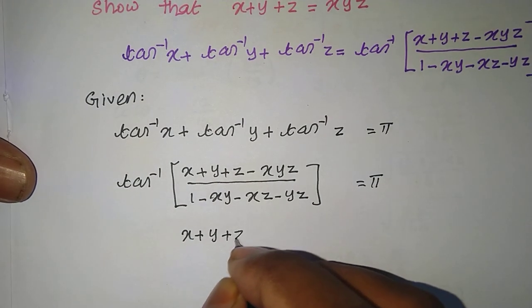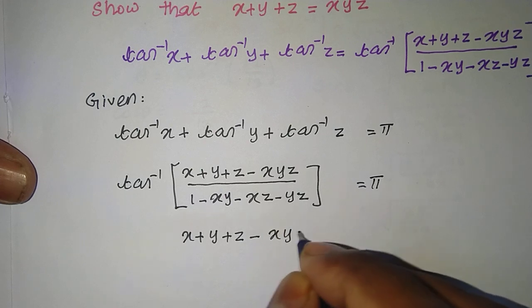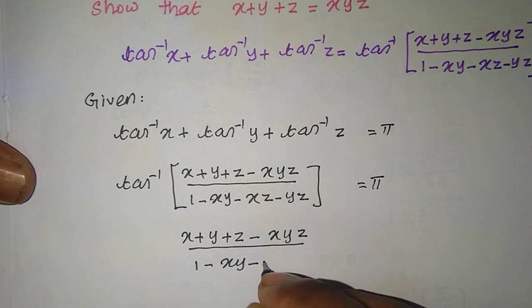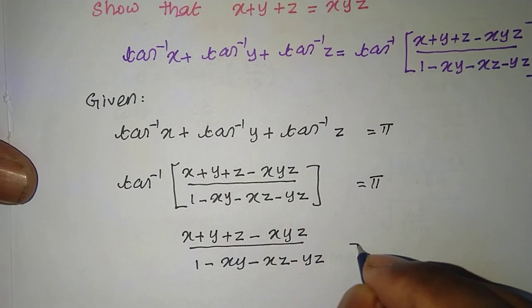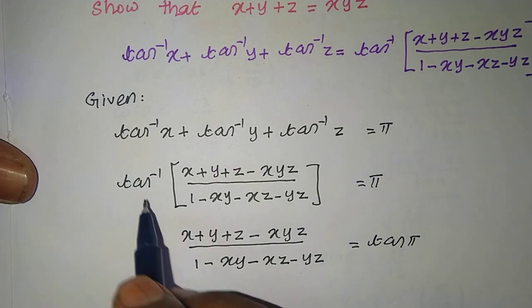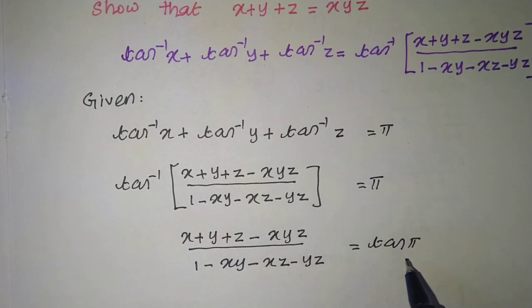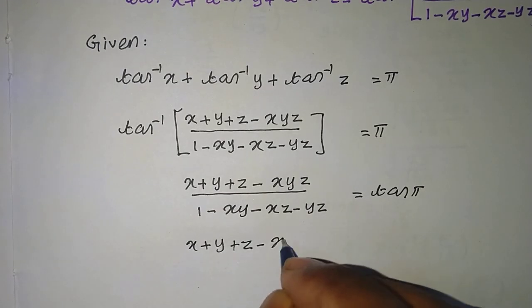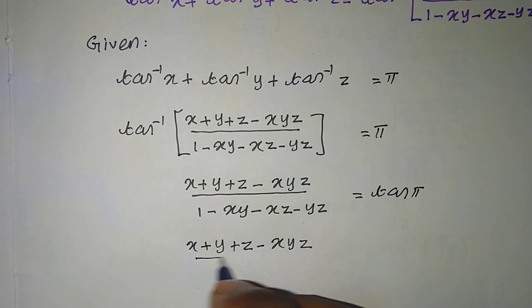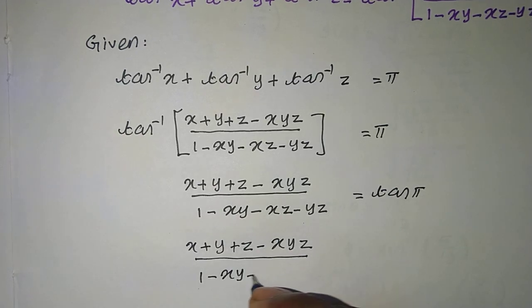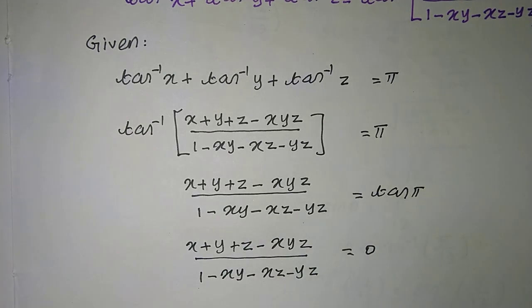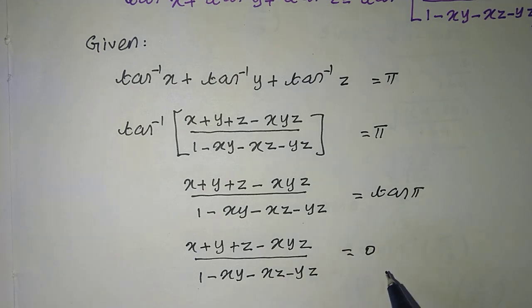Therefore, x plus y plus z minus xyz, divided by 1 minus xy minus yz minus xz, equals tan(pi). Since tan(180°) equals tan(pi) equals 0, the right-hand side is 0.